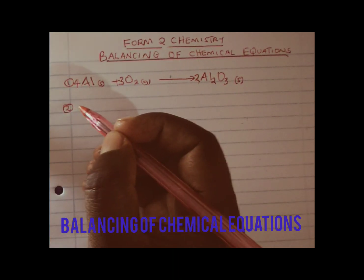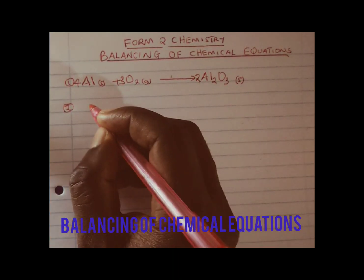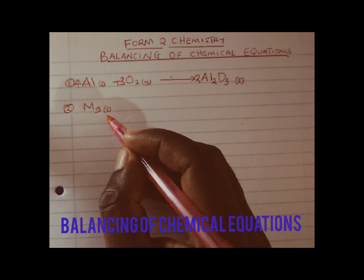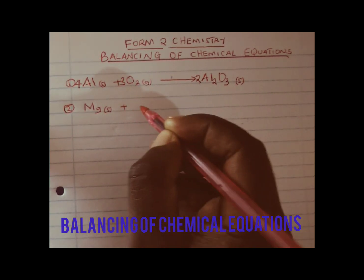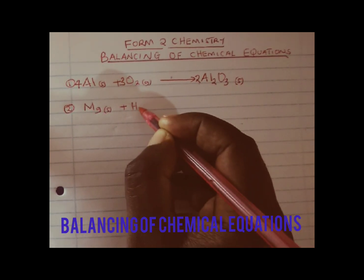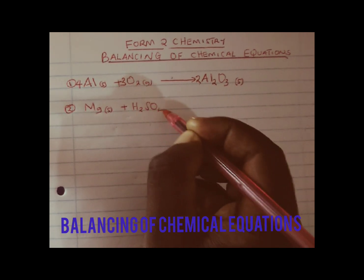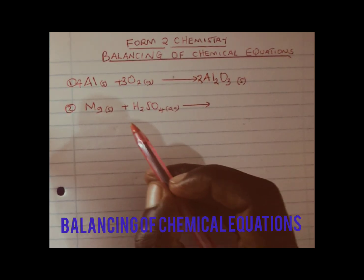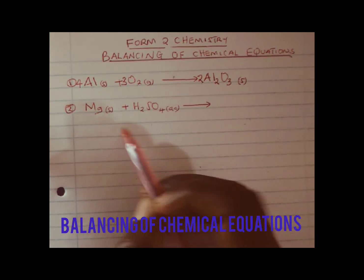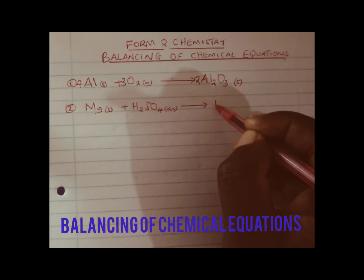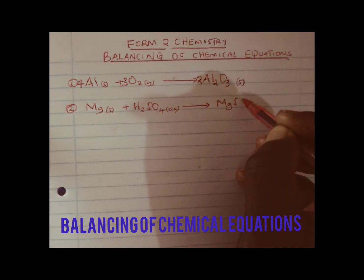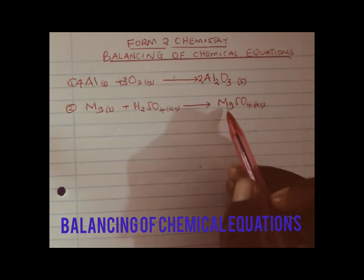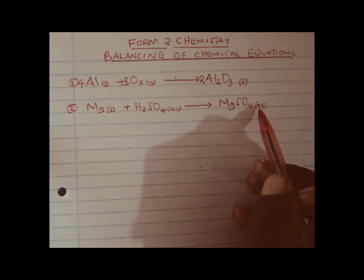Number 2: let me consider the reaction between magnesium — magnesium is a metal, and therefore metals are solids at room temperature — reacting with sulfuric acid. Those are the 2 reactants. Magnesium will come and take sulfate, so that we have magnesium sulfate, which is aqueous. Remember, magnesium sulfate is soluble, so we use aqueous.